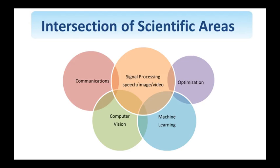As time goes on, the boundaries between traditionally separate areas become fuzzy — there is overlap between these fields. When it comes to image and video processing as covered in this class, there is overlap with the fields of communication, computer vision, machine learning, and optimization.